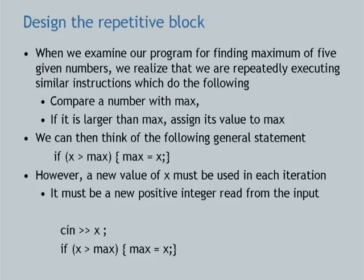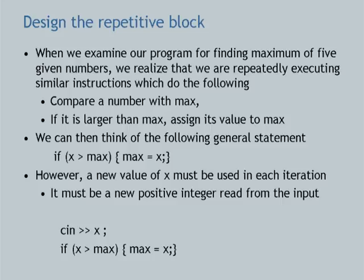I want to compare max with a value, and if that value is greater than max, reassign max to that value. This is the action I want to repeatedly execute. But a new value of x must be used in every iteration — I can't keep comparing the same x. Consequently, what I want to repeat is not just this instruction but an associated input instruction executed just before it. So what I want to repeat is: I input a value, compare it with max, and if it is greater than max, I reset max. This is the block I would like to repeatedly execute.